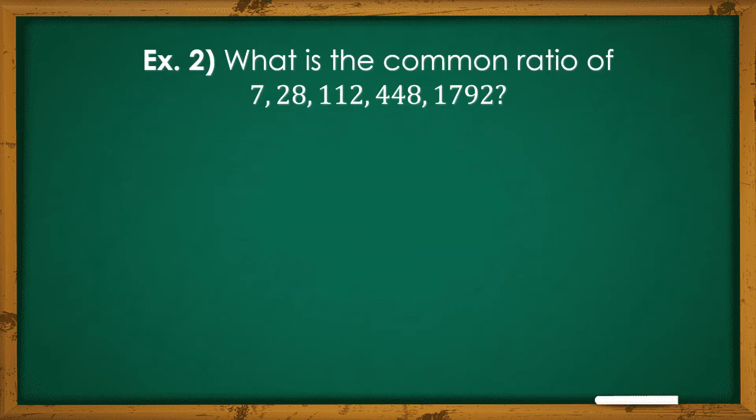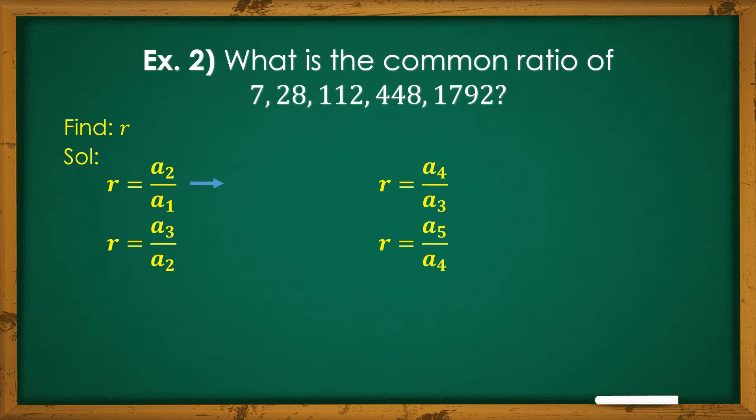Let's consider example number 2. What is the common ratio of 7, 28, 112, 448, and 1792? We are going to find R, which is our common ratio. For our solution, kuha tayo ng mga consecutive numbers. We will start with a sub 2 over a sub 1, a sub 3 over a sub 2, a sub 4 over a sub 3, a sub 5 over a sub 4 to get our common ratio. Let's start with the first. So, a sub 2 is 28, a sub 1 is 7. By dividing, we get 4.